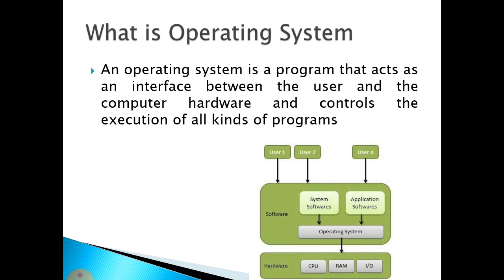When we install an operating system, system-related files are stored in the primary drive. In Windows, we generally store the operating system in the C drive, which contains Program Files, x86 folders, and other important folders. If we delete or damage these folders, the entire system will collapse because they contain system-related files and kernel data.